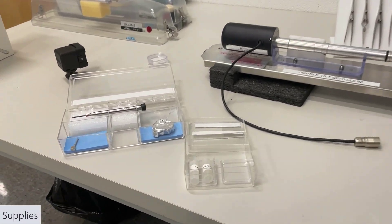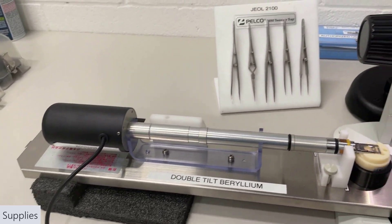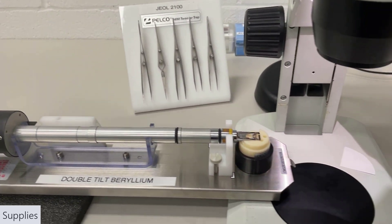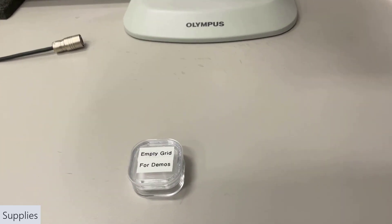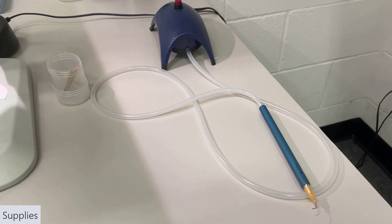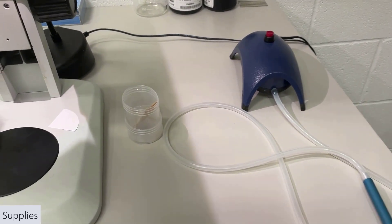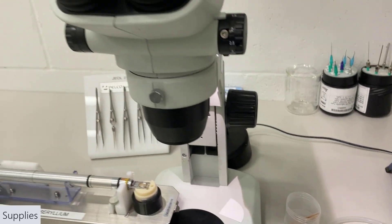First off, we need to gather supplies. Depending on the scope you use, those may be different. We'll need tweezers, your sample of course. Vacuum tweezers are optional, but I find them to be very useful, and some toothpicks and a binocular scope to help you see what you're doing.